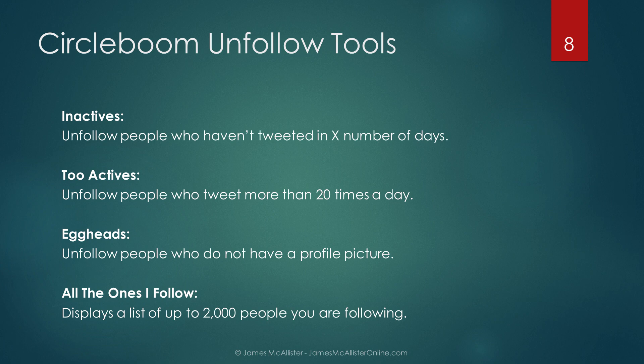Too Actives — allows you to identify and unfollow people who tweet more than 20 times a day, useful for cleaning up your feed. However, if your goal is to maximize followers, it may be better to use Twitter lists for organization instead. Eggheads — identify and unfollow people who don't have a profile picture. All the Ones I Follow — displays a list of up to 2,000 people that you follow. Whitelist — a list of people you never want to unfollow.